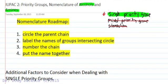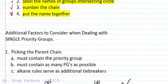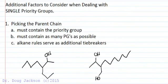Any time we start a nomenclature video we always look at our road map, because that's what we always have to do in a naming problem. We've got to circle the parent chain, label the names of groups intersecting that circle, and number the chain so we're ready to put the name together. Let's look at additional factors to consider for each of these rules when dealing with a single priority group.